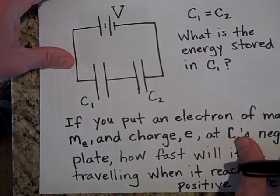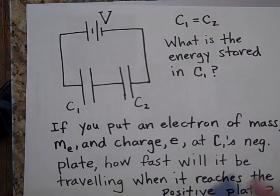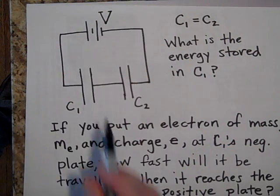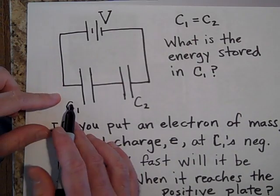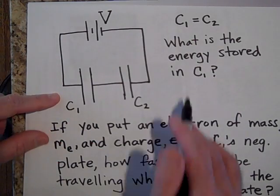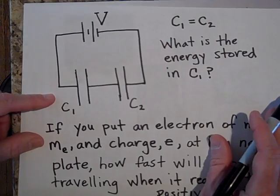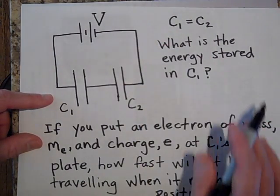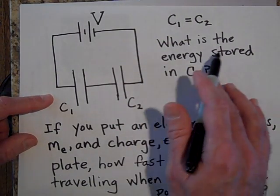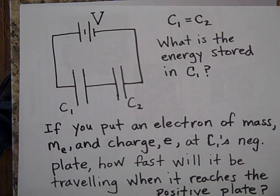Going on. Okay, we have a battery V and two capacitors C1 and C2, but C1 is equal to C2 in value. It's got the same capacitance C1 and C2. Okay, what is the energy stored in C1? Can you tell me what the energy stored in C1 is?